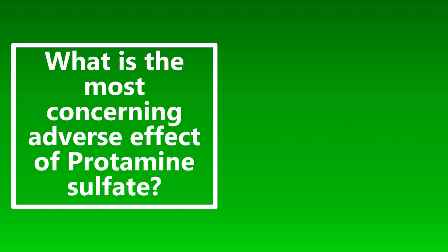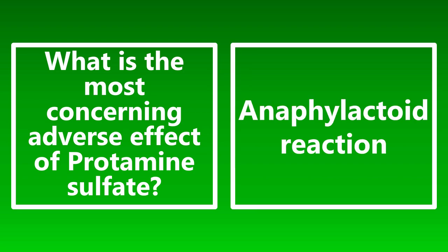What is the most concerning adverse effect of protamine sulfate? It's going to be an anaphylactoid reaction. Protamine sulfate is used for anticoagulation reversal of heparin, and one of the more concerning adverse effects is an anaphylactoid reaction. Things could get severe enough to cause cardiovascular collapse and cardiac arrest, so be on the lookout for that anaphylactoid reaction as an indicator of impending cardiovascular issues.